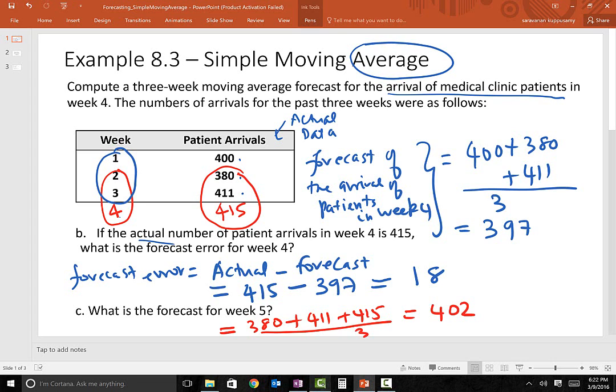In this problem, the weight given to the past data never changes because it is a simple average. For instance, to arrive at 397, we take one third of 400 plus one third of 380 plus one third of 411. So we weigh the past history equally in the case of simple moving average. But there might be a situation where the recent past may be more important than the distant past. If that is the case, we use a different technique called weighted moving average.